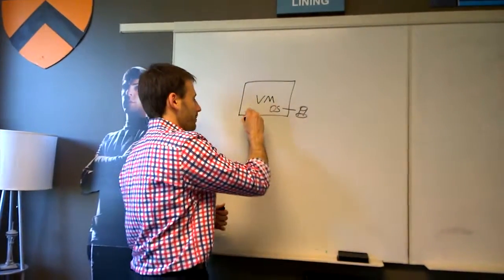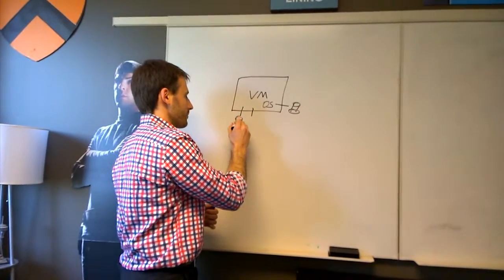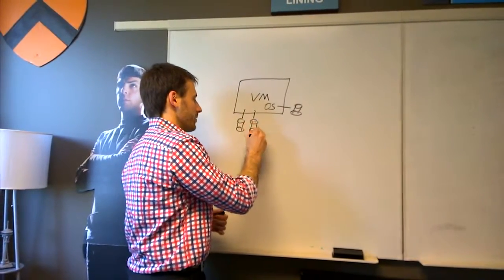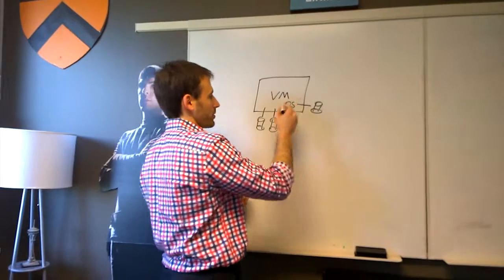And so your OS disk here and then you may have, let's say, a couple data disks, right? And so this could be Linux. It could be Windows. If this is Windows, it's your C drive typically.